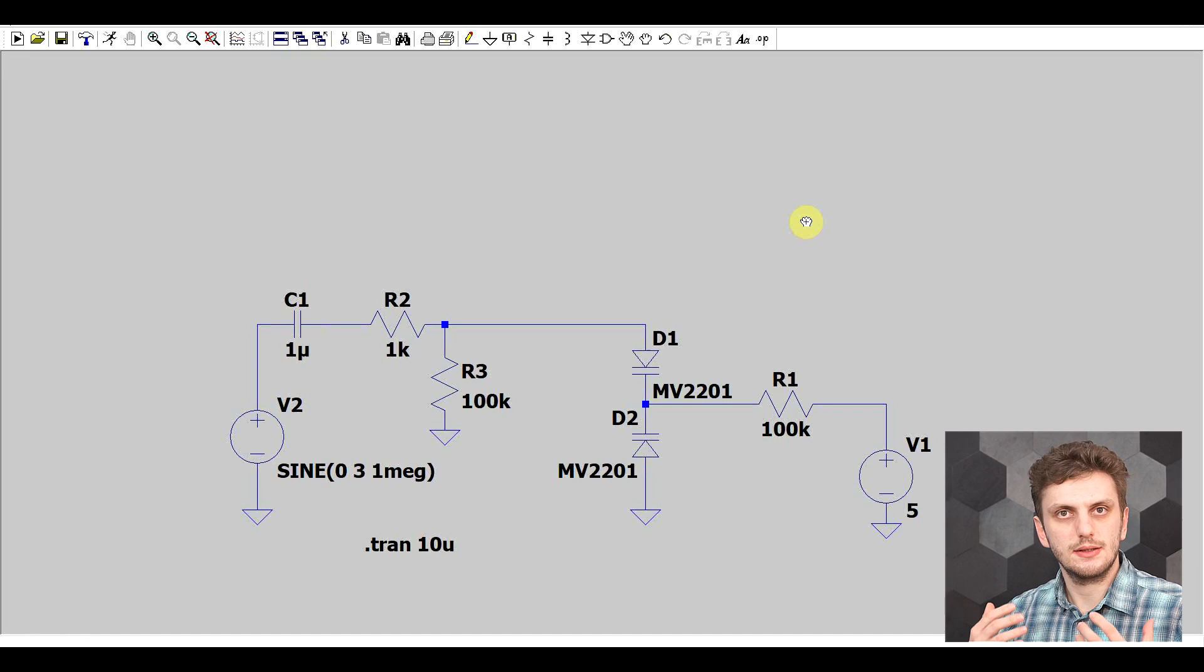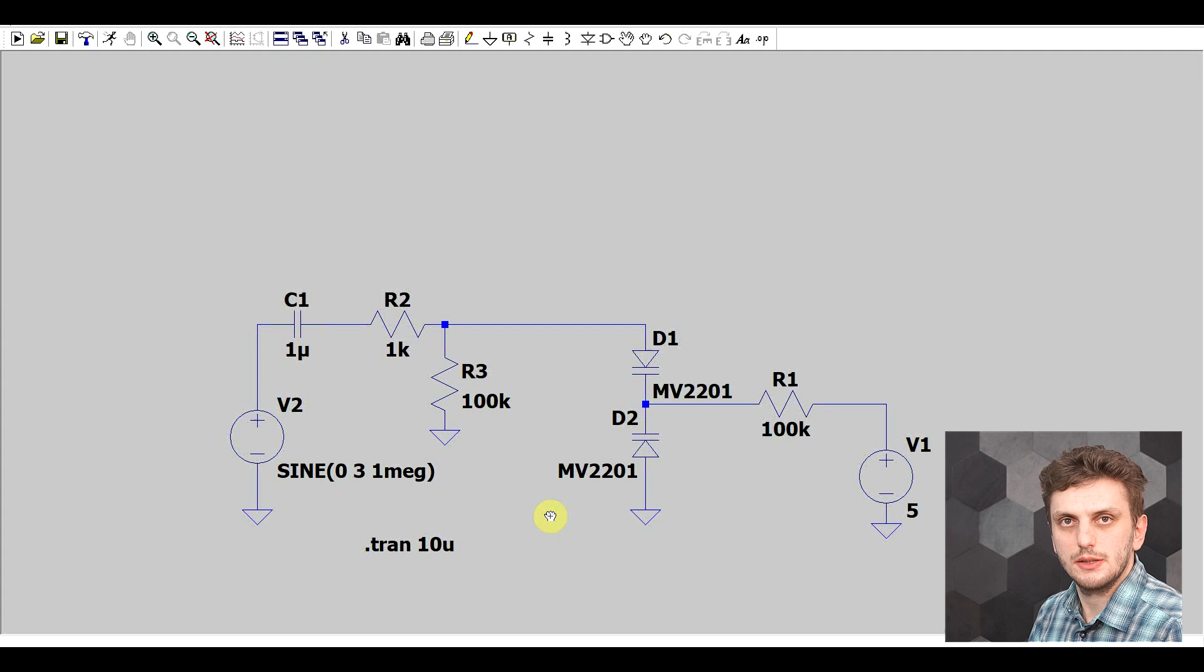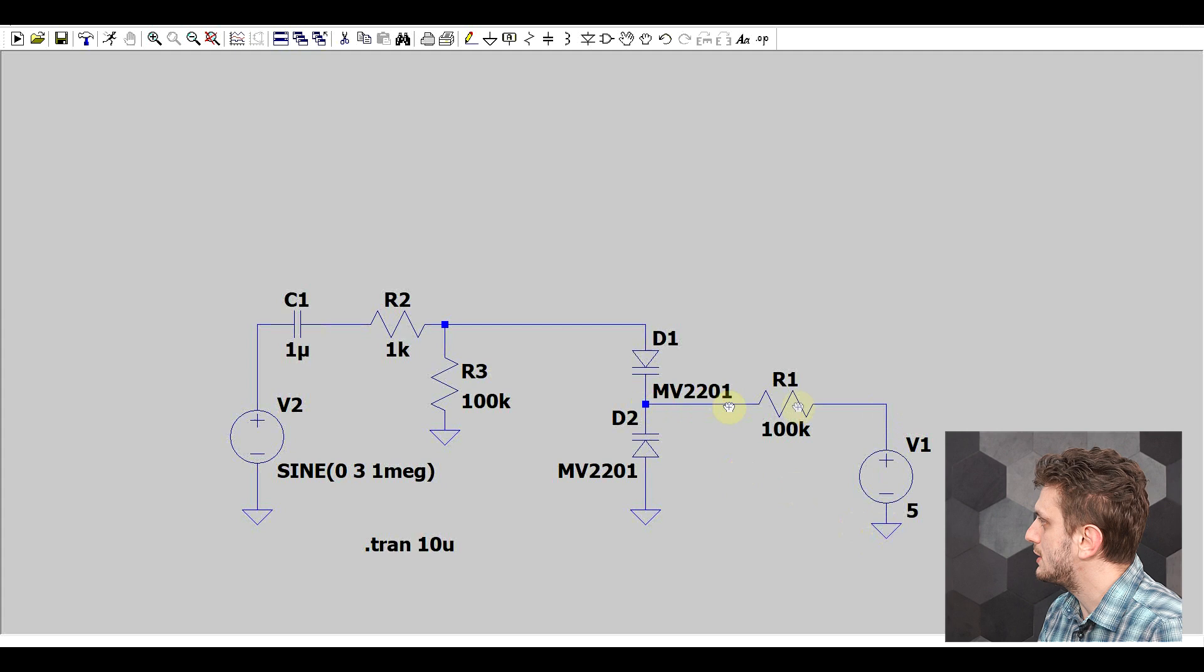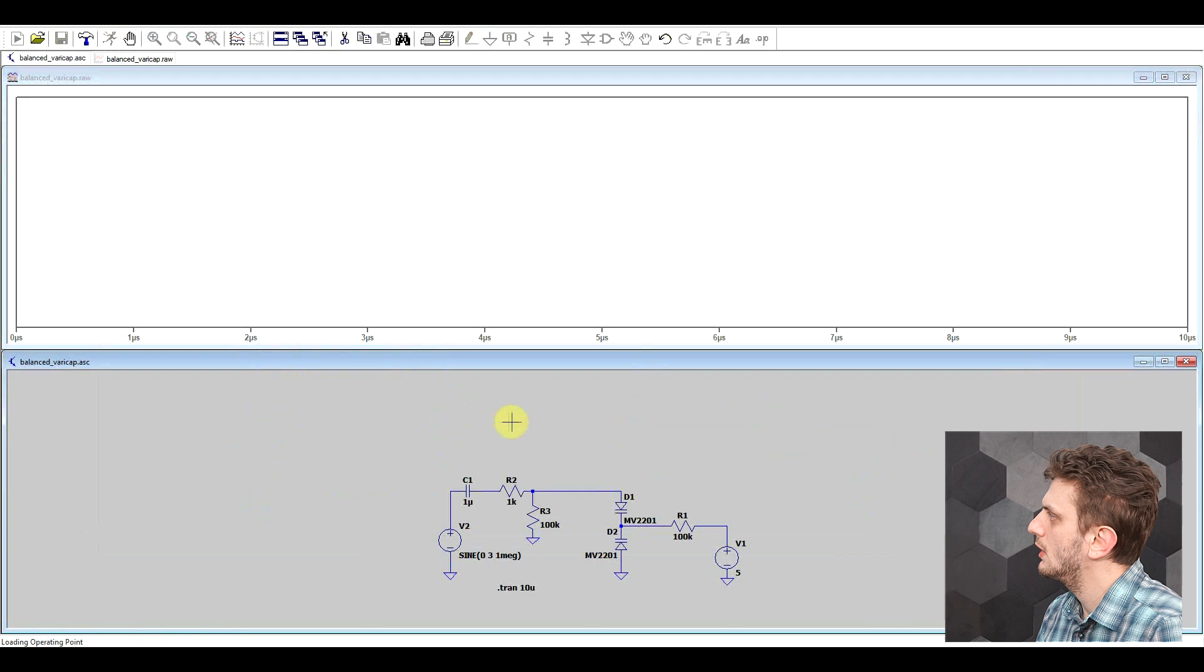Now to minimize this capacitance variation effect, the circuit that you will need to use will be the double varicab diode circuit, also called the balanced circuit. So here I set up this sort of circuit without adding the inductor, and here I'm inserting my DC potential through a 100 kilo ohm resistor, and then my second diode is pulled to ground through an extra 100 kilo ohm resistor, and then I'm inserting an AC signal through an isolation capacitor.